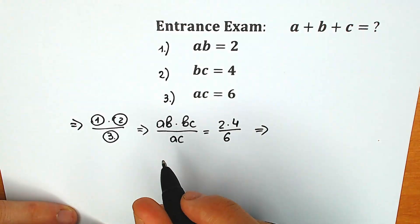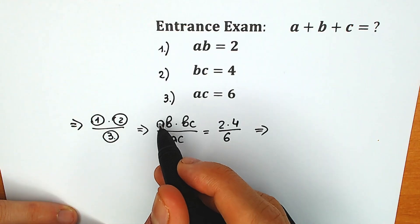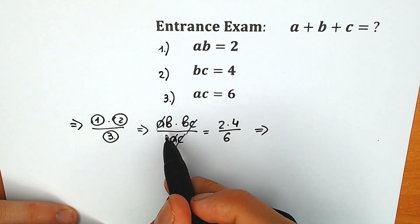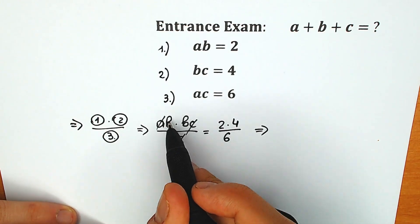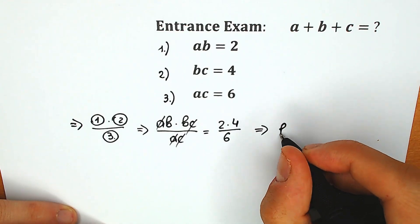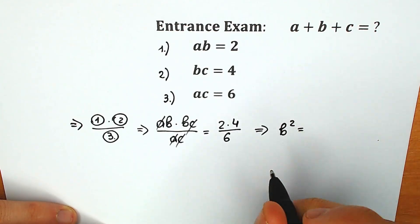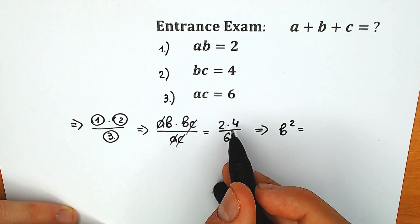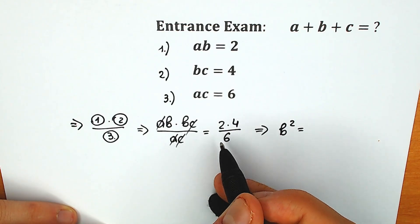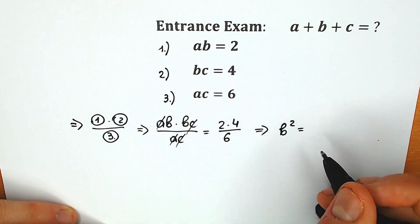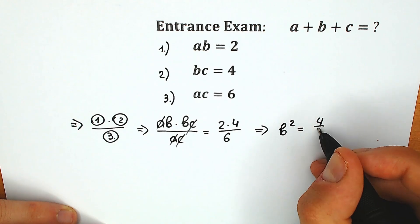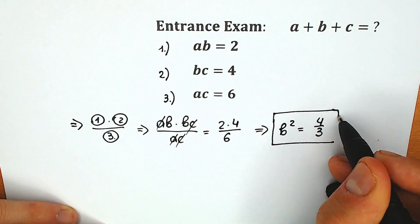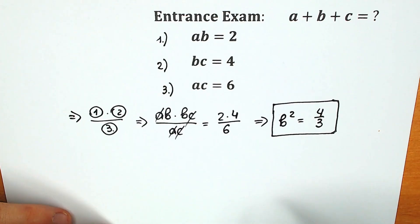On the left side, we can easily cancel our a and cancel our c. As a result, we have only b squared. So b squared equals 2 times 4, which is 8, over 6 — or we can write it as 4 over 3. So b squared equals 4 over 3.